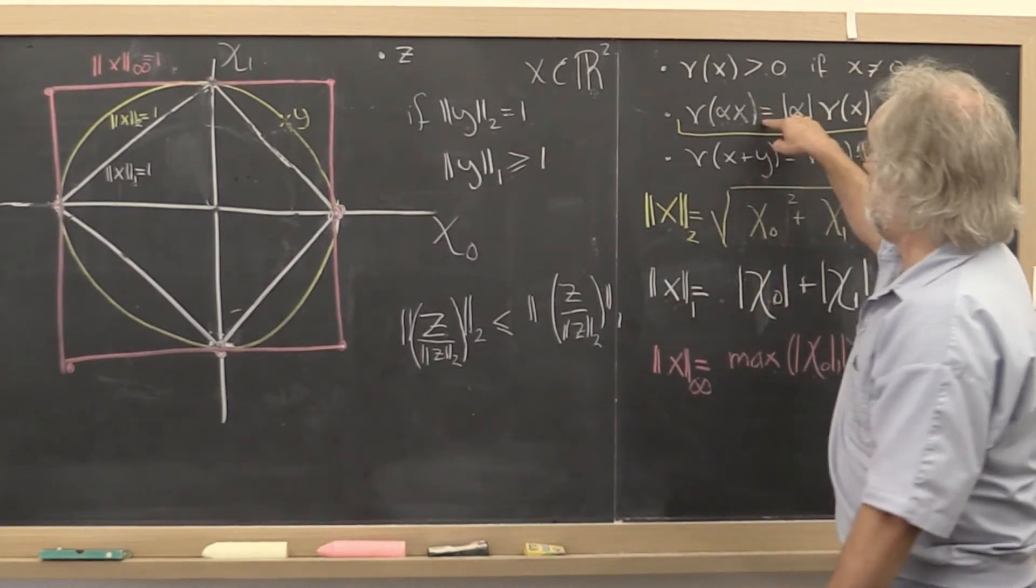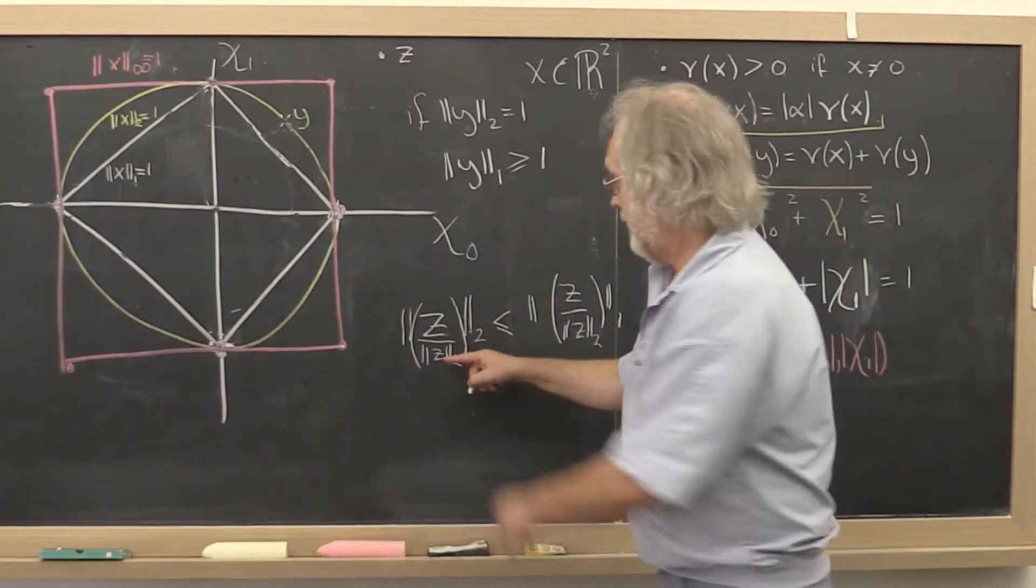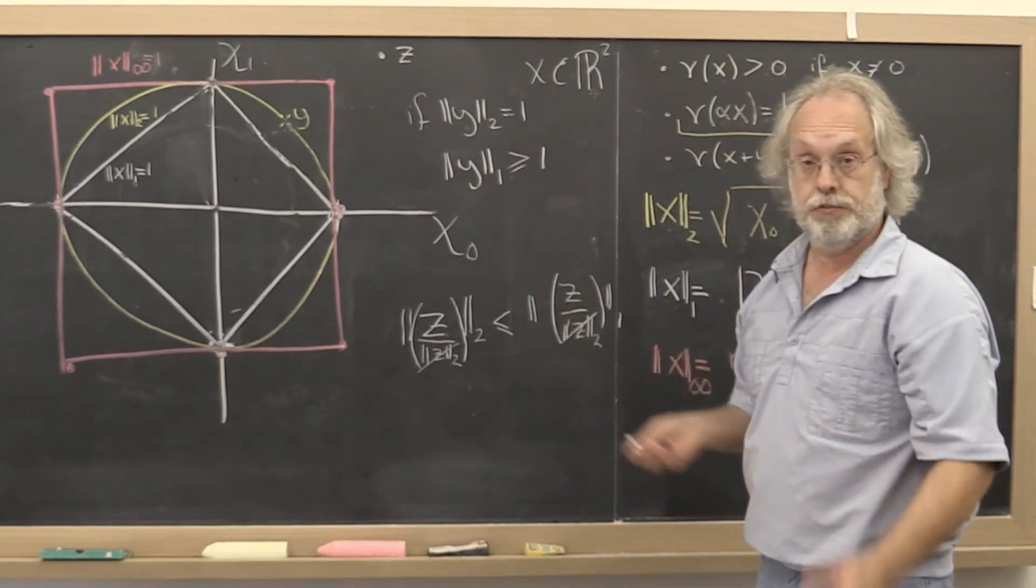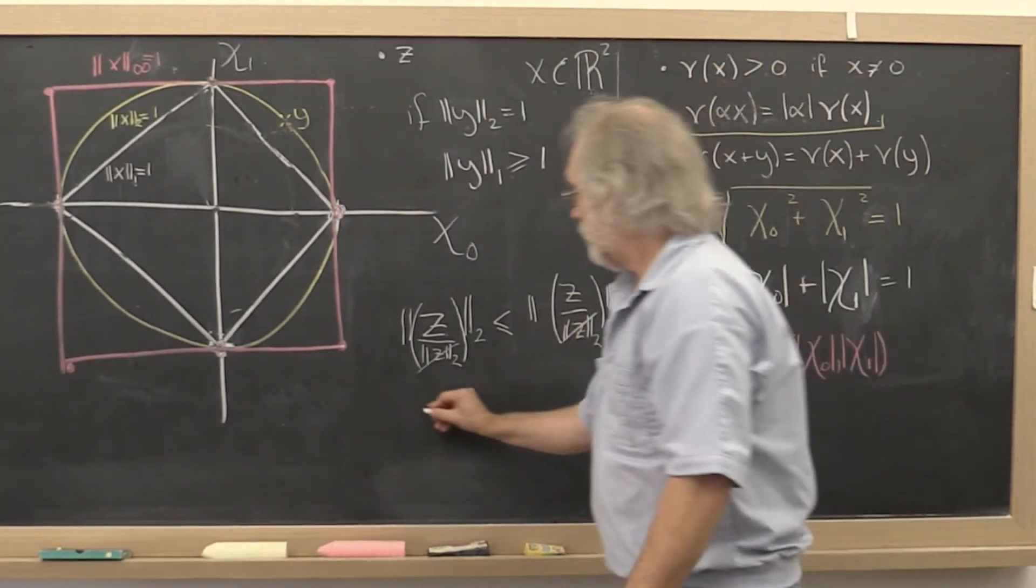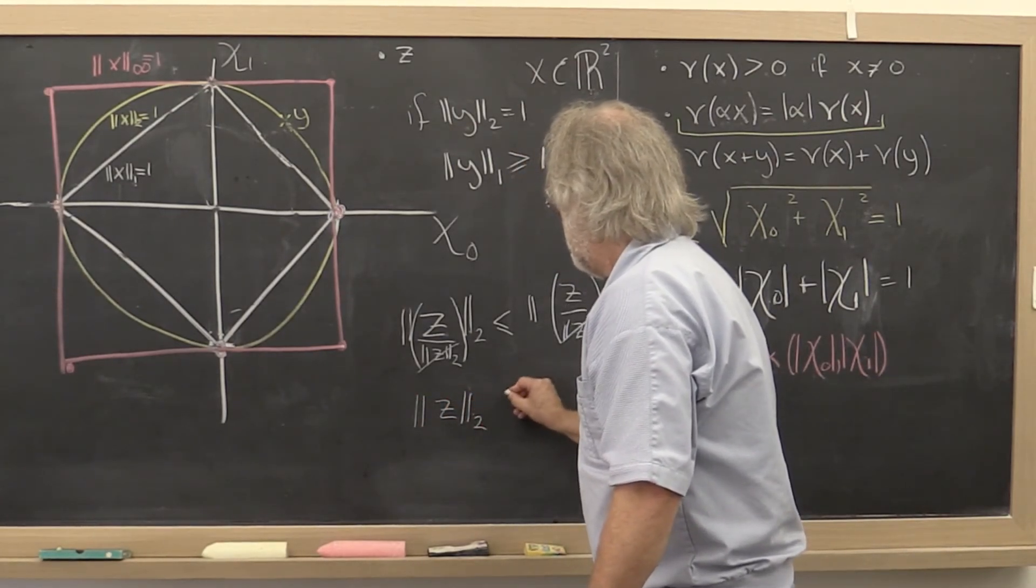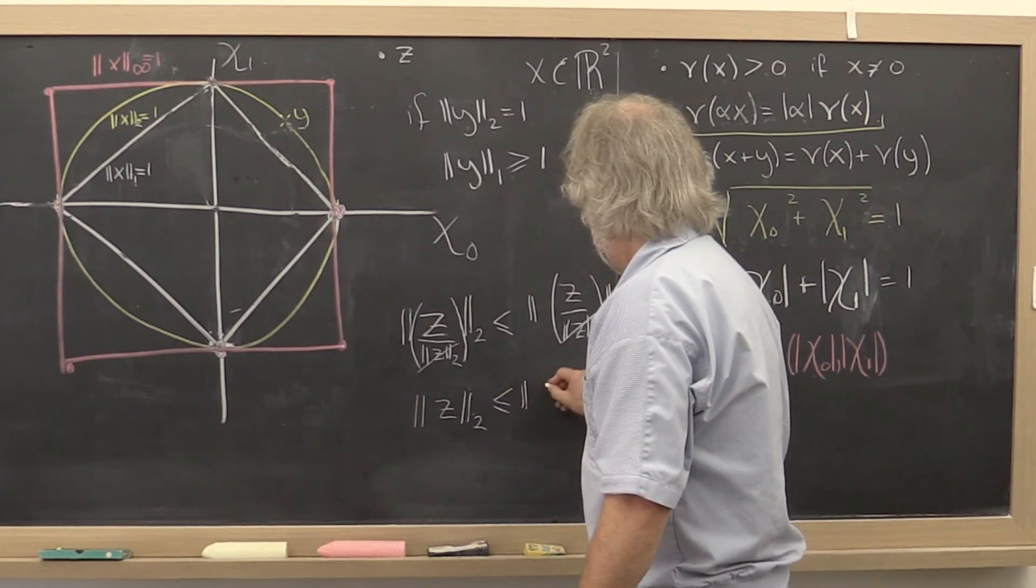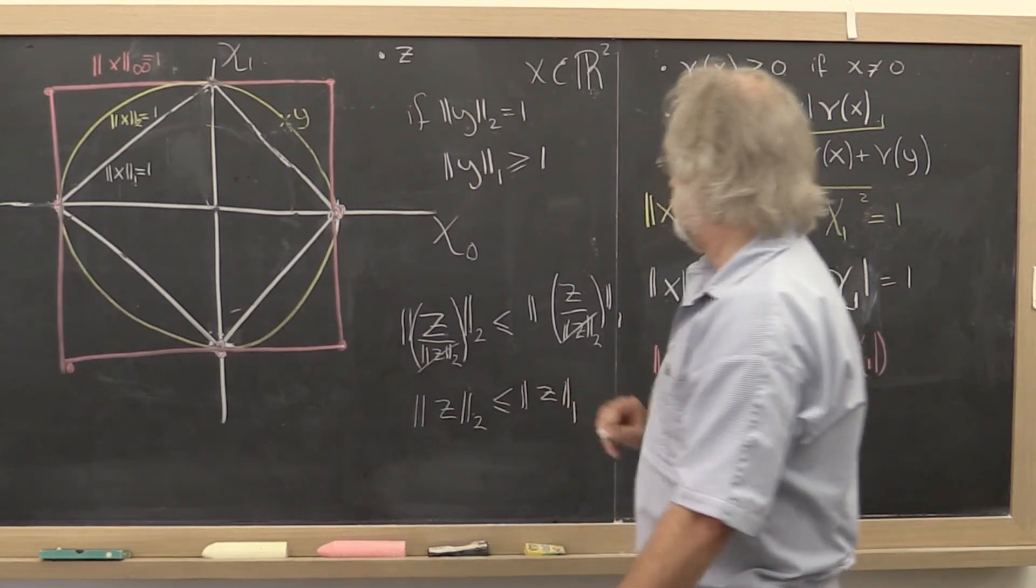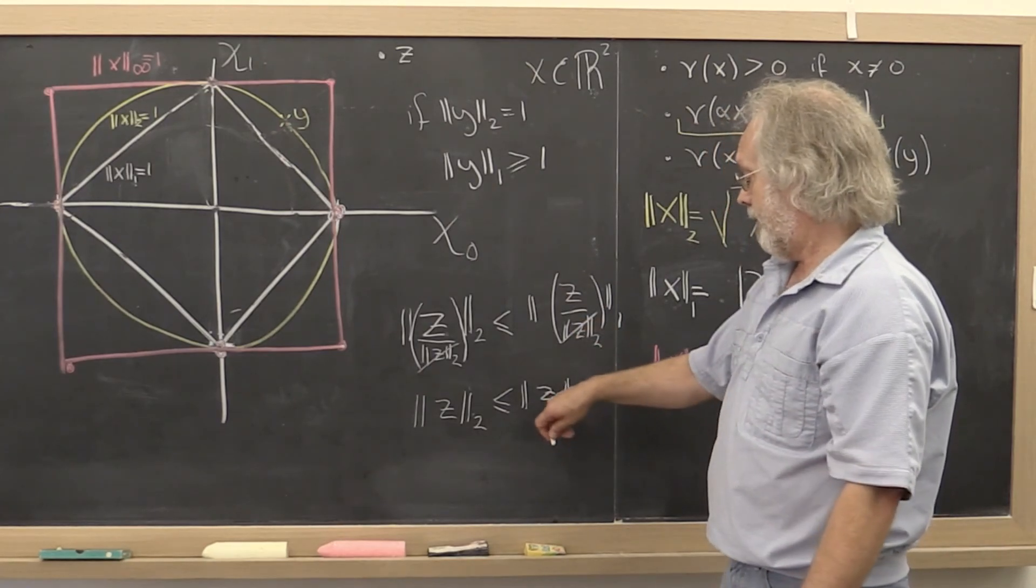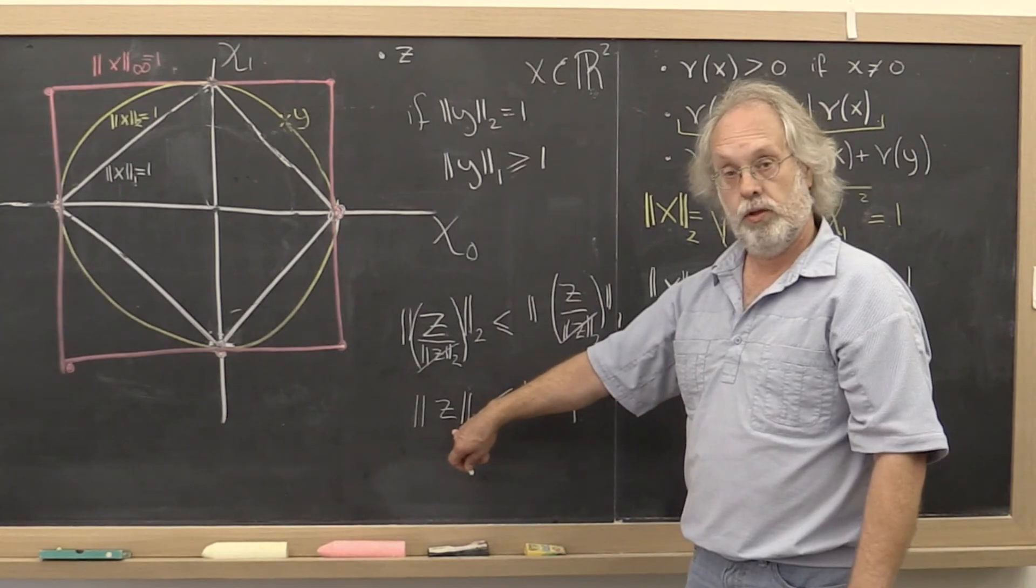Now again, applying the fact that the norm is homogeneous, we can cancel both of these on both sides as long as z was not the zero vector. And we conclude that it's always the case, no matter what vector z you choose, that the 2 norm of z is less than or equal to the 1 norm of z. So what does that mean? If a vector is small in the 1 norm, then it's small in the 2 norm.